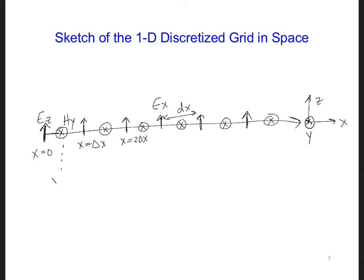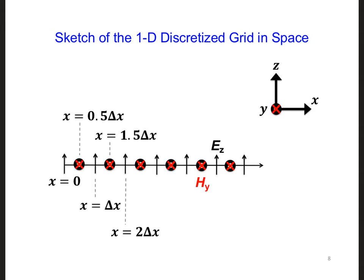And for this, I could label it as being x equal delta x over 2. Here is x equal 1.5 delta x, and so forth. Here is a cleaned up version of what the grid looks like.